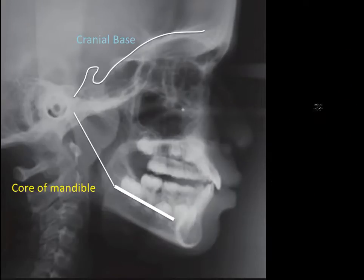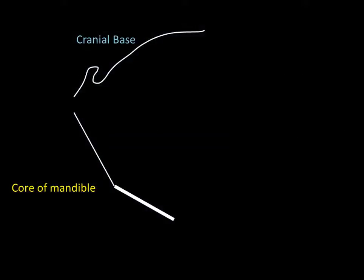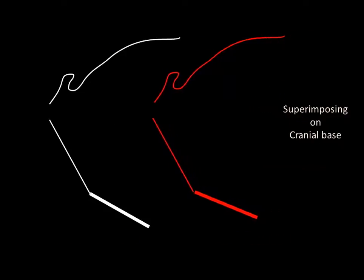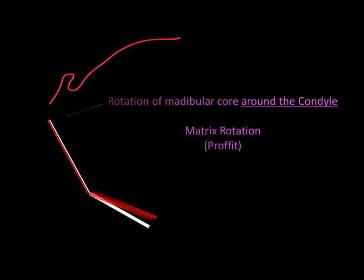For that, we draw another line from the center of the condyle to the core of the mandible. This is how the tracing would look like. Again, we have tracings at two time points, T1 and T2. Now superimposing on the cranial base, rotation of the mandibular core observed around the condyle has been called matrix rotation by Prophet.